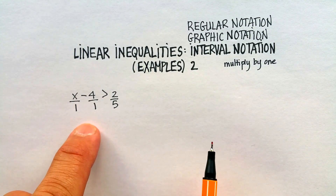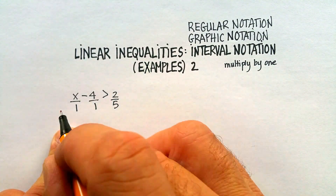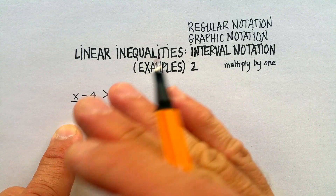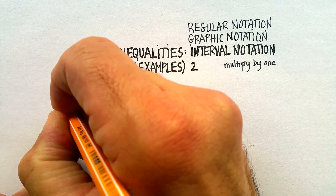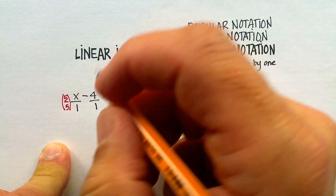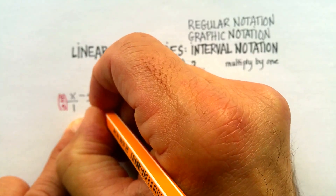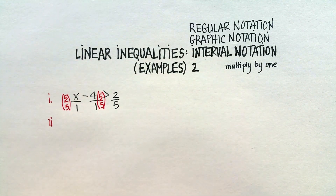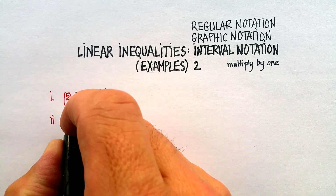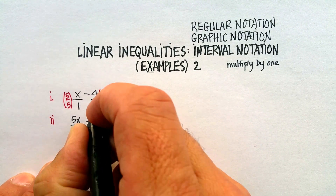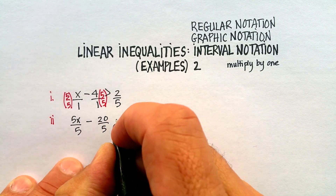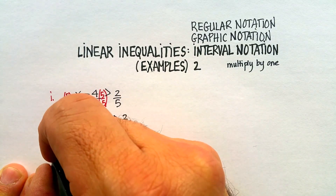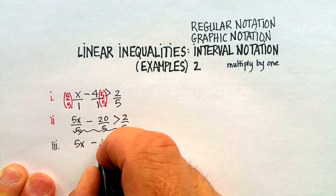When the denominator is the same in each term, I can cross them all out. So how am I going to make a denominator of 5 without changing the proportion of the problem? I'm going to multiply by 1, and the 1 I'm going to multiply by is 5 over 5. I'll do the same thing with the other term — 5 over 5. Now I rewrite this as 5x over 5 minus 20 over 5 is greater than 2 over 5.